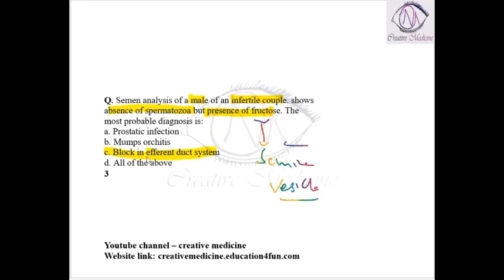If there is block in the efferent duct system, the seminal vesicle will continuously produce fructose. So in the semen, fructose will be there, but because of the block the spermatozoa will not reach the seminal vesicle, and as a result absence of spermatozoa will be seen.